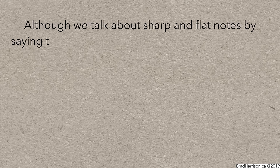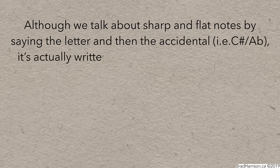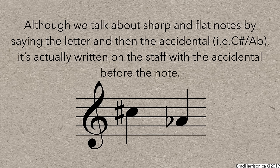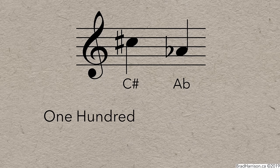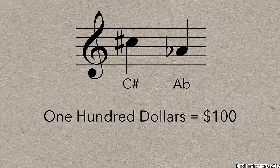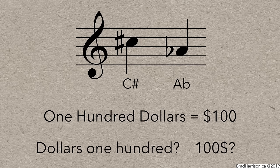First, although we talk about sharp and flat notes by saying the letter and then the accidental, like C sharp and A flat, it's actually written on the staff with the accidental before the note. It's a bit like how most currencies are written. We say $100, but write the dollar sign before the number. If you turned it around, it would look pretty weird.